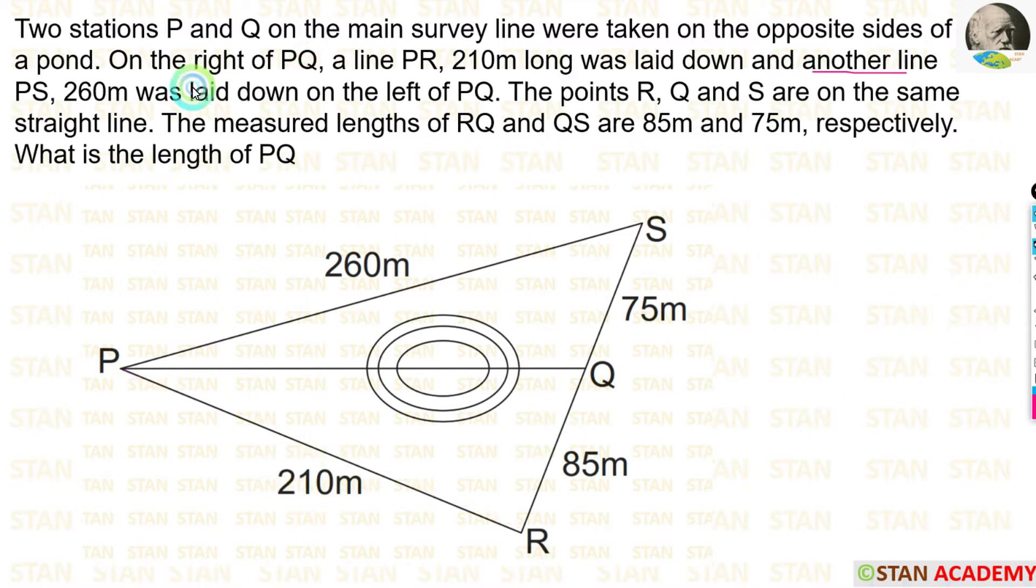Another line, PS, 260 meter was laid down on the left of PQ. On the left of PQ, another line is made, that is PS and its length is 260 meter. The points R, Q and S are on the same straight line.